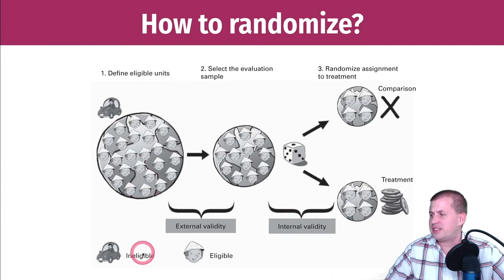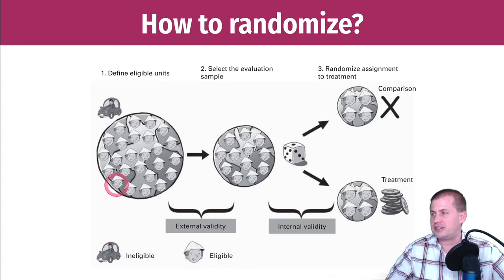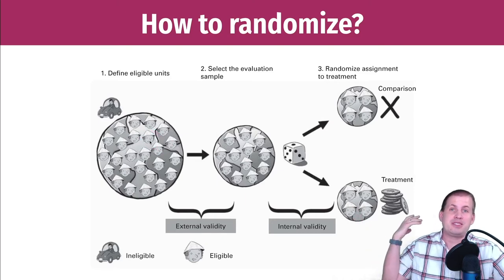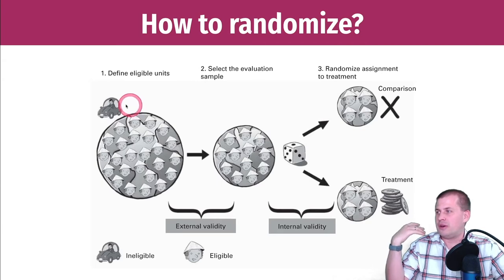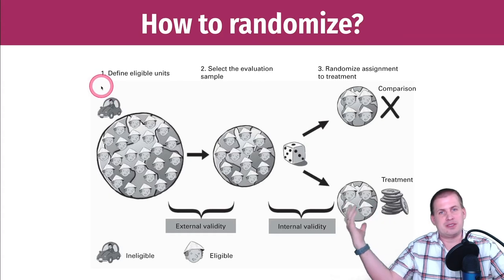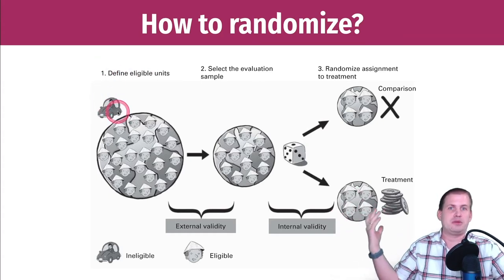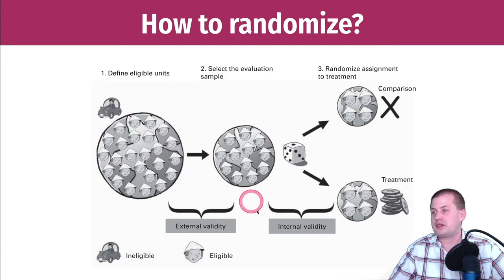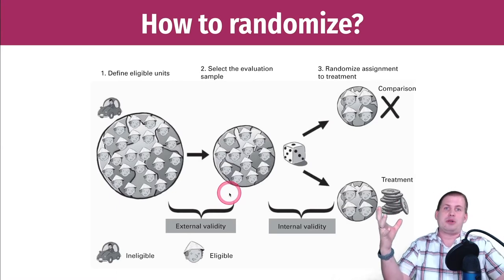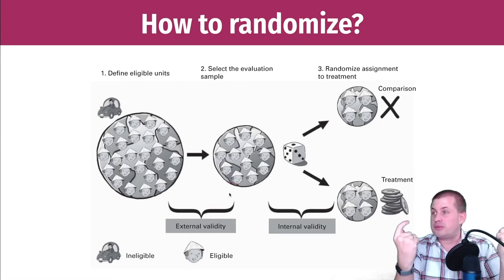You look out in the world and define who the eligible units are. In this program it looks like they're targeting people who don't have cars, so people with cars are ineligible. You don't want to offer the program to people who are ineligible, because either they'll use it and it won't help them at all, or they'll refuse it and you'll have lots of non-uptake. So you don't want to offer the program to people who can't even use it.